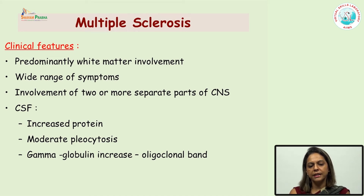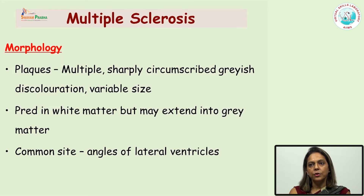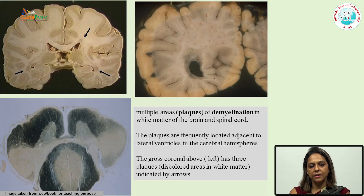If you look at the CSF, there can be increased pleocytosis, increased protein, and increase in gamma globulins. Looking at the histology, you mostly see plaques which can be multiple, are sharply circumscribed and variable in size, mostly occur in the white matter, and dominantly the starting point is the periventricular region in the angles of the lateral ventricles. This is a gross picture showing plaques in the periventricular region.